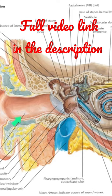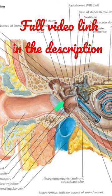This surface is the medial surface. The medial surface of the membrane is convex and it bulges towards the tympanic cavity. The maximum point of convexity is known as the umbo.